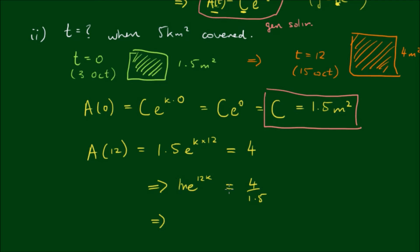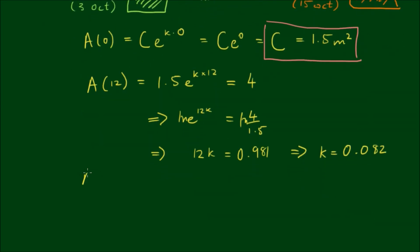Taking the log of both sides we get 12K is equal to the log of 4 on 1.5 which is equal to approximately 0.981. So then if we divide both sides by 12 we get K equals approximately 0.082. So the explicit solution is A of T is equal to 1.5 E to the 0.082 times T.